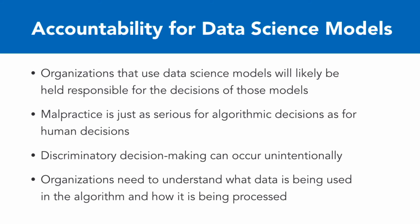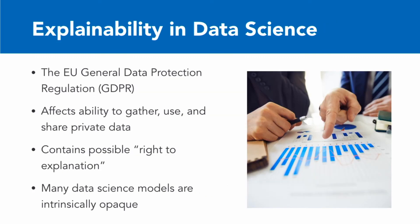This means organizations need to understand what data is being used in the algorithm, where that data came from, how it's measured, and what its limitations are, as well as how that data is being processed by the algorithm. This relates to explainability in data science. If you've been working in the digital marketing world, you've become intimately familiar with the European Union's General Data Protection Regulation, or GDPR, which has dramatically affected the way people can gather marketing data and what they can do with it.